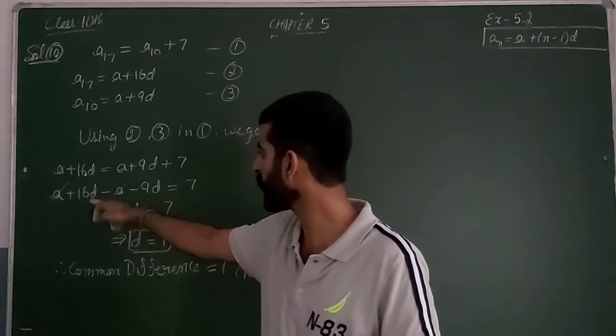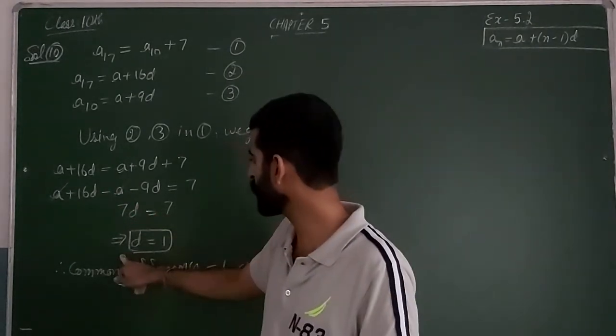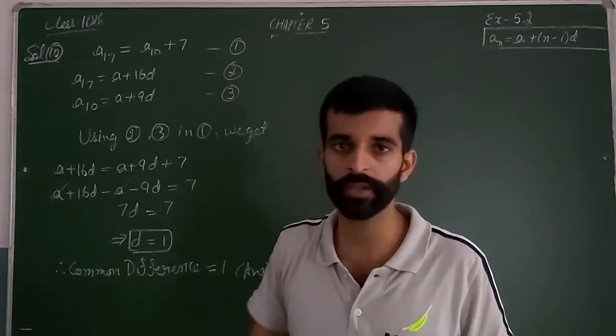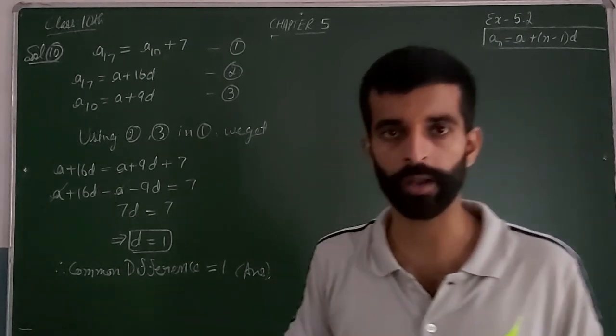Cancel this A, and we have to calculate 7D is equal to 7. From here you can calculate D is equal to 1. Therefore D is the common difference, so the common difference is equal to 1.